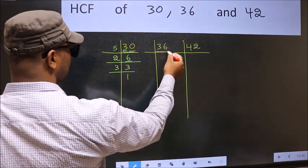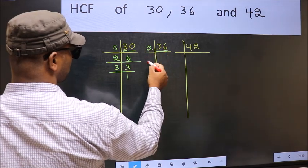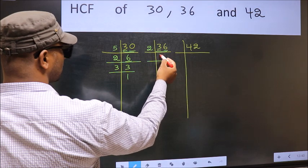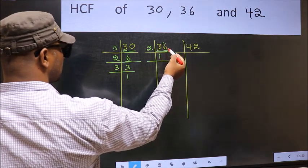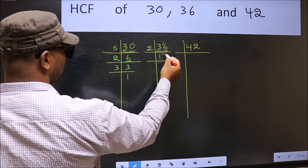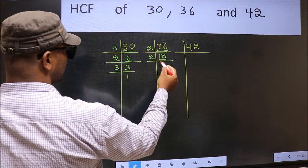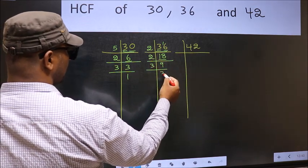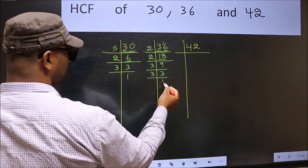Now the other number 36, last digit 6, even, so take 2. First number 3, a number close to 3 in 2 table is 2, 1 is 2. 3 minus 2, 1, 1 carried forward 16. When do we get 16 in 2 table? 2, 8 is 16. Now we have 18, 18 is 2, 9 is 18. Now 9 is 3, 3 is 9. Now we have 3, 3 is a prime number, so 3, 1 is 3.